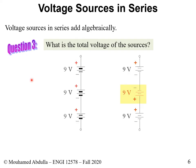Voltage sources can also be connected in series. For example, if you have three 9-volt batteries and connect them in series, in principle you expect to get 3 times 9, or 27 volts. However, one must be careful about polarity when connecting sources.